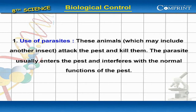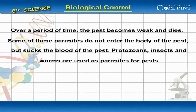Use of Parasites. These animals, which may include another insect, attack the pest and kill them. The parasite usually enters the pest and interferes with the normal functions of the pest. Over a period of time, the pest becomes weak and dies. Some of these parasites do not enter the body of the pest, but suck the blood of the pests. Protozoans, insects, and worms are used as parasites for pests.